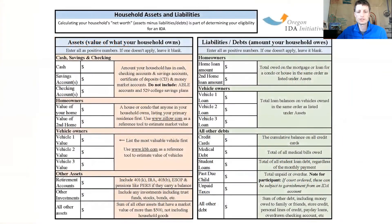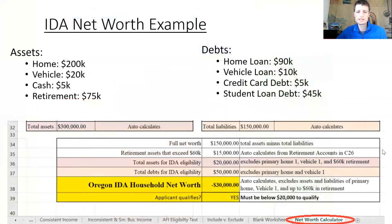The net worth calculation was updated in 2020. The following is the last tab of the income calculator, also available as a PDF. These are the fields that should be reported and inputted into outcome tracker. For a net worth example, the bottom field will auto-calculate the same way outcome tracker would calculate IDA eligible net worth. In this example, the full net worth is $150,000, but when you exclude the assets and debts of the home and vehicle plus the retirement limit, the IDA eligible net worth drops to negative $30,000.